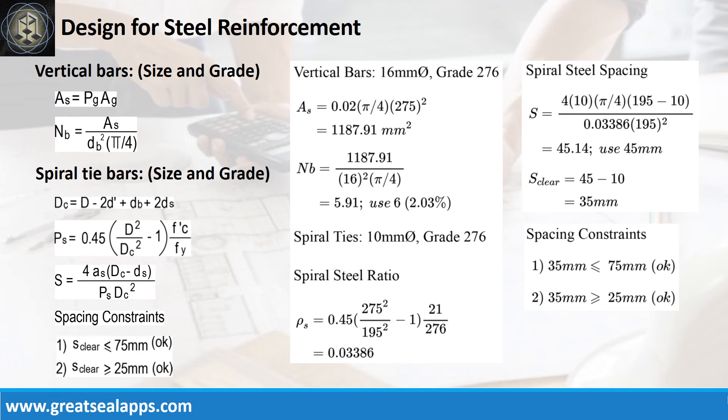The spiral steel ratio, rho S, equals 0.03386 for a spiral pitch of 45 millimeters.